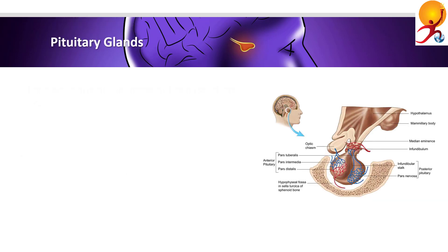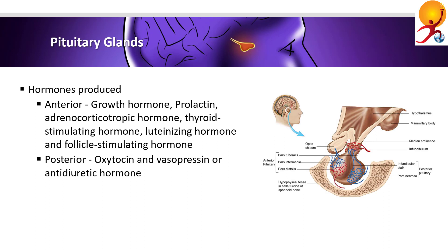The anterior part produces the growth hormone, prolactin, and four tropic hormones which regulate other endocrine glands: adrenocorticotropic hormone (ACTH), thyroid stimulating hormone (TSH), luteinizing hormone (LH), and follicle stimulating hormone (FSH). The posterior part releases two hormones that are produced in the hypothalamus: oxytocin and antidiuretic hormone (ADH), also called vasopressin.